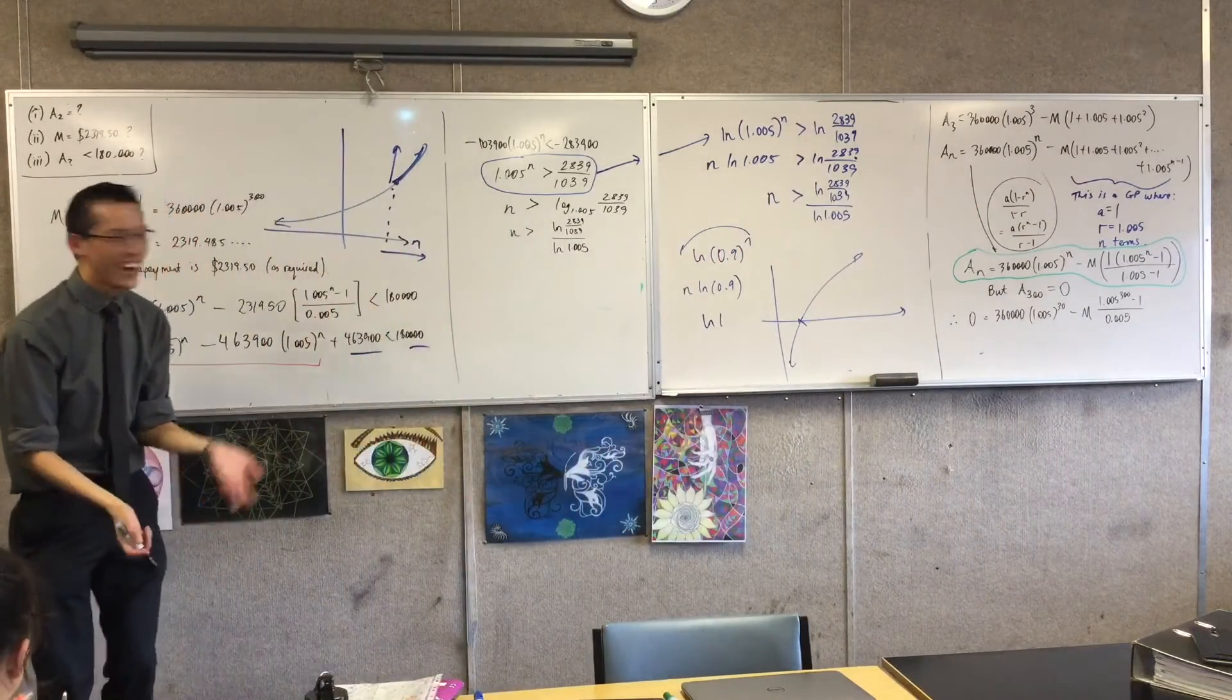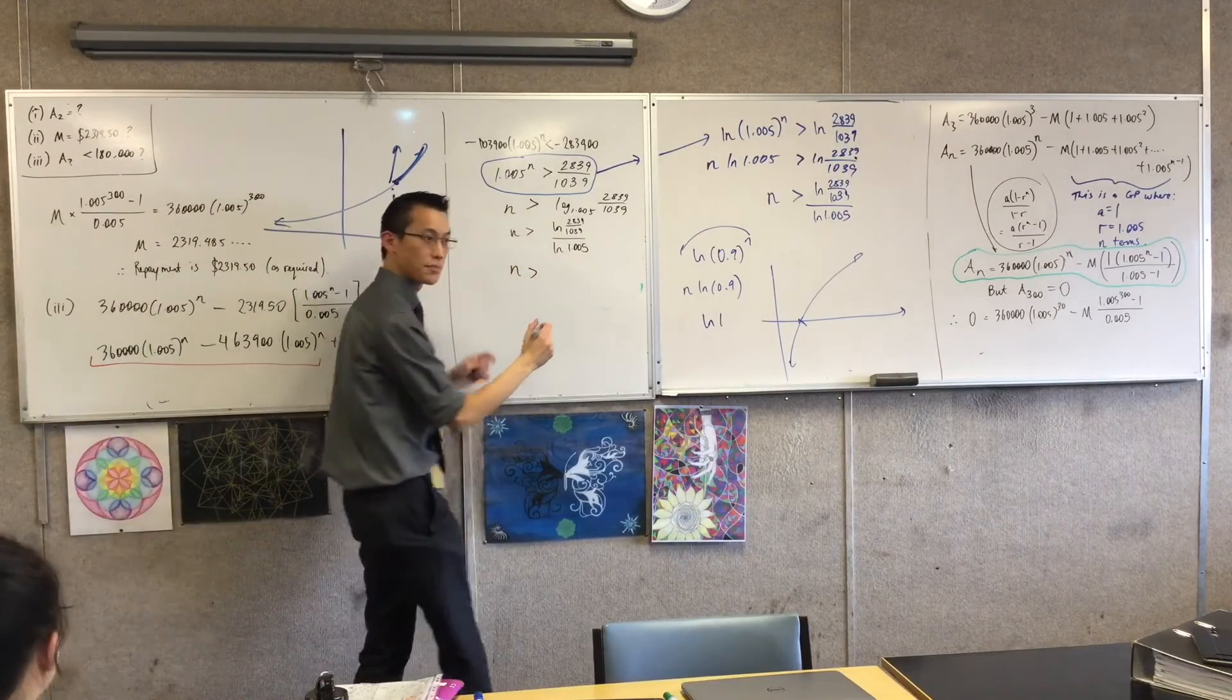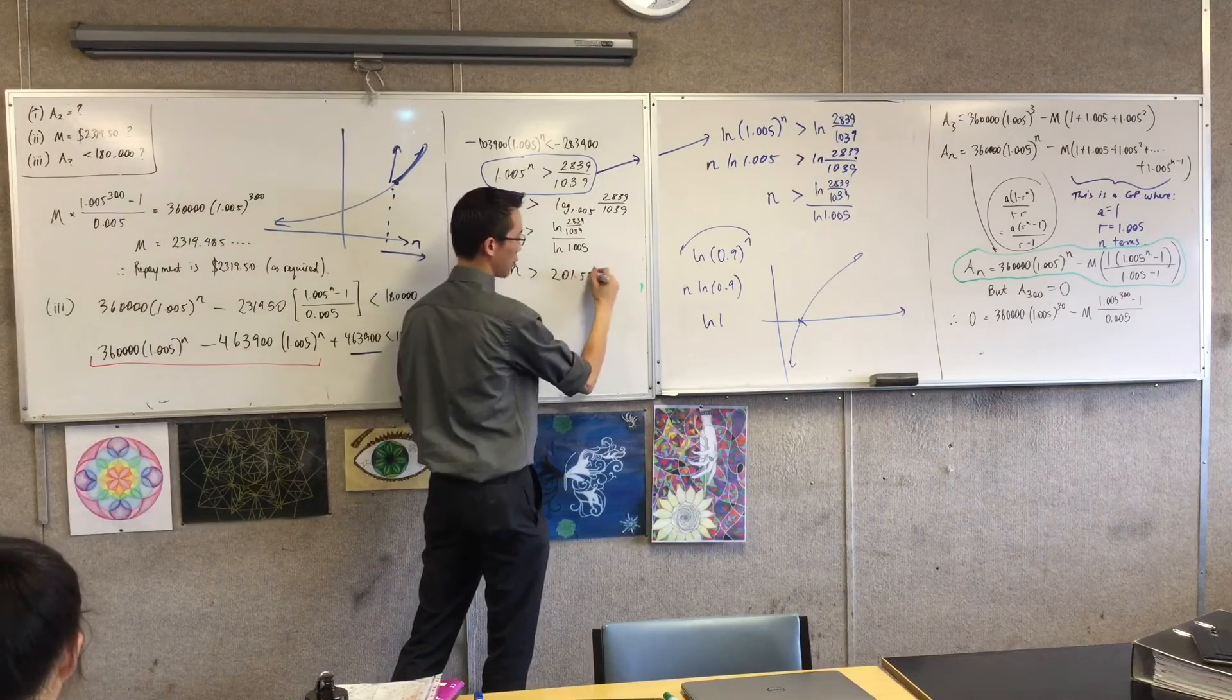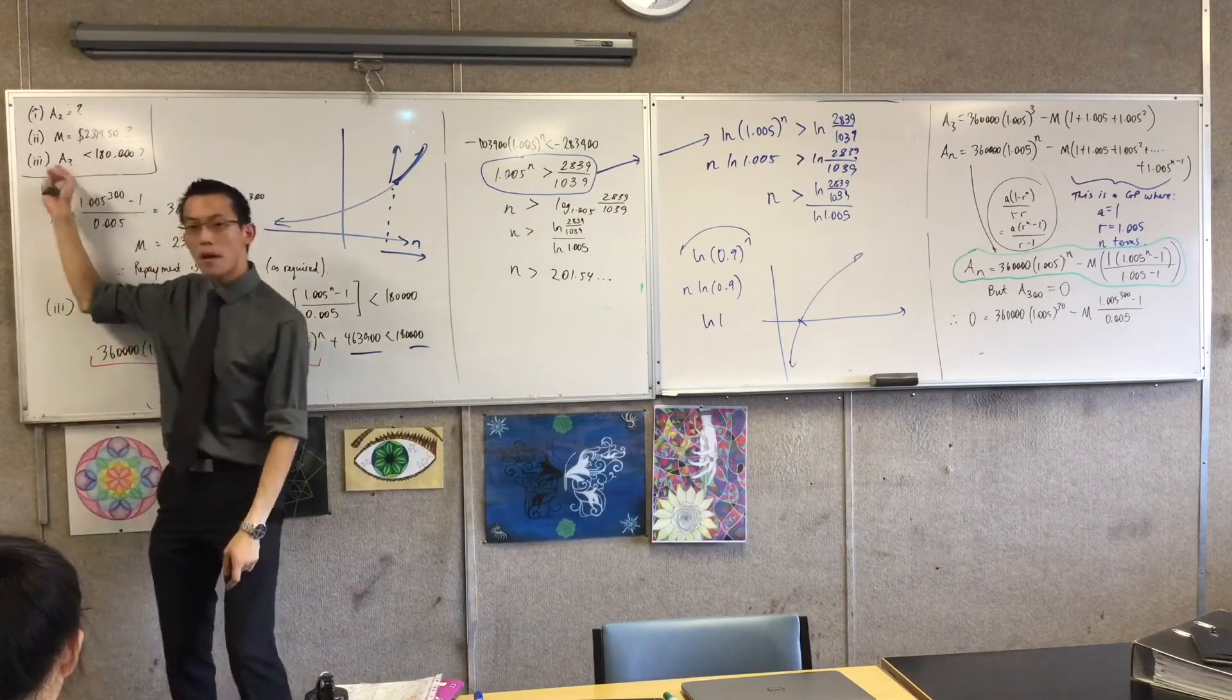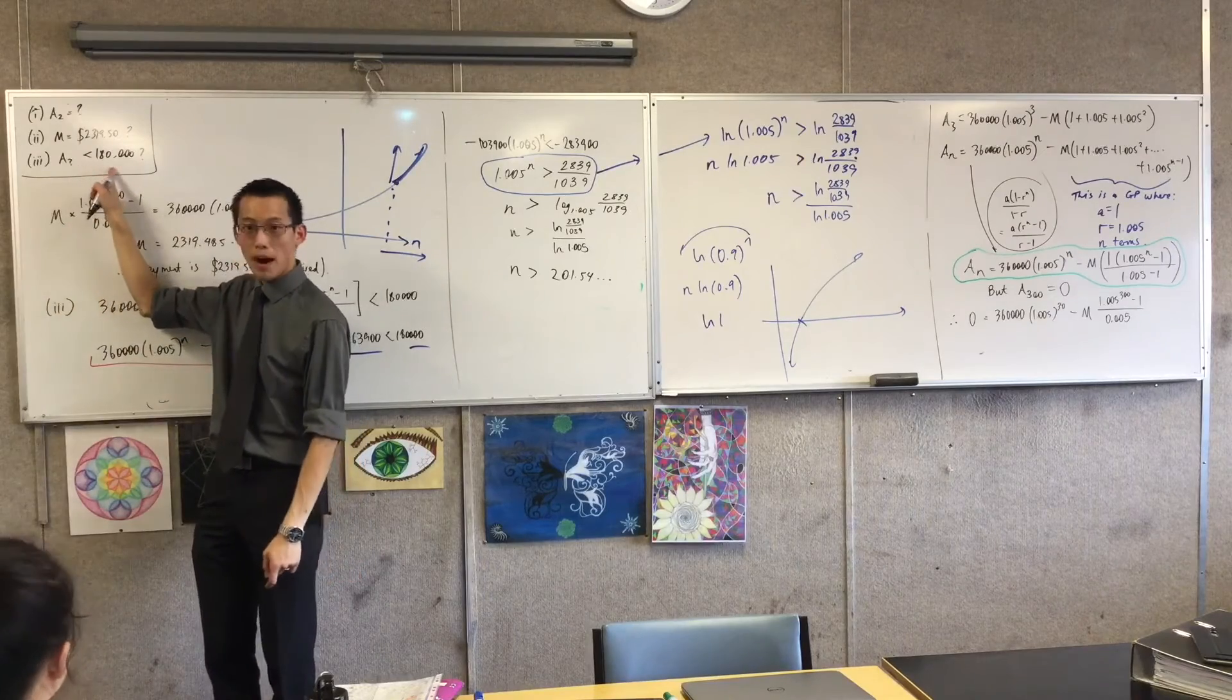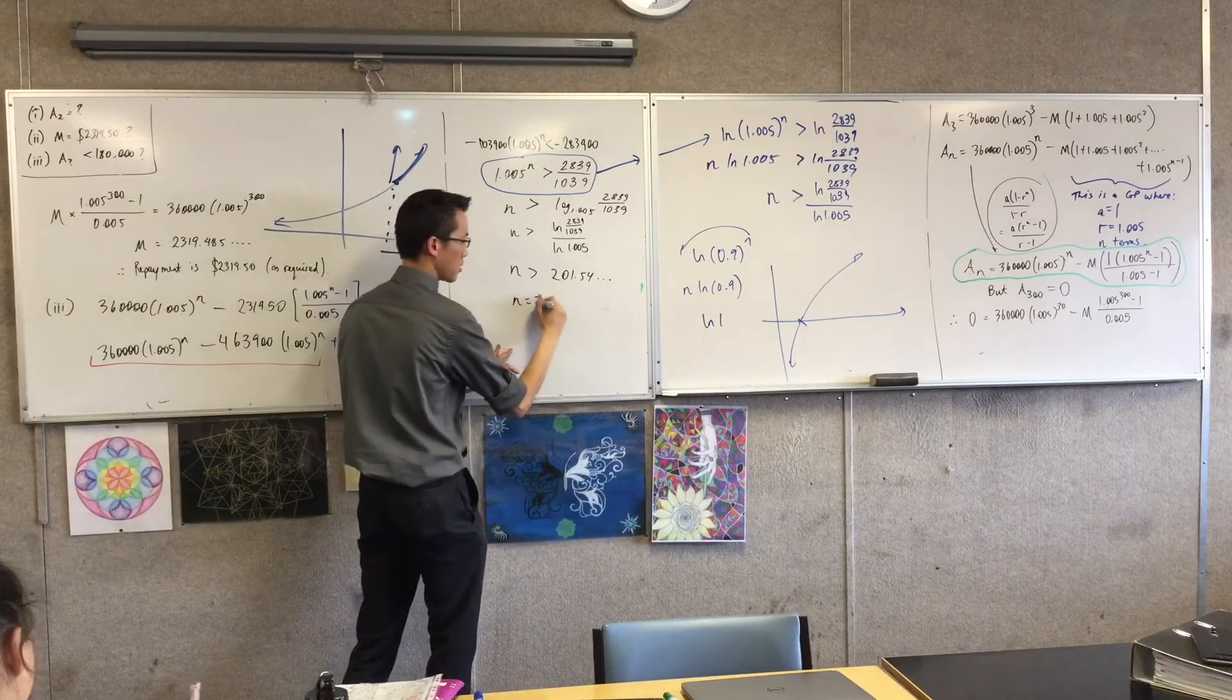Okay, now, I'm not quite there yet. I haven't said the number. What is the number? Give me a decimal. 201.54. Okay, good. What was the actual question? So, the original question was, what month is it that I tick past and get less than $180,000 owing? And that month is? 202. 202.